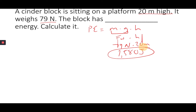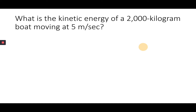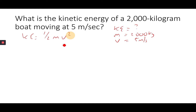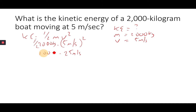What is the kinetic energy of a 2,000 kilogram boat moving at 5 meters per second? Kinetic energy is unknown, mass is 2,000 kilograms, velocity is 5 meters per second. KE equals one-half mv squared: 5 squared is 25, times half of 2,000 which is 1,000 kilograms. 1,000 times 25 equals 25,000 joules.